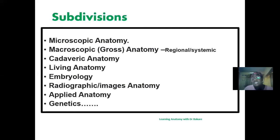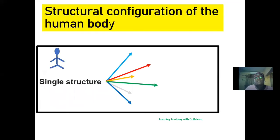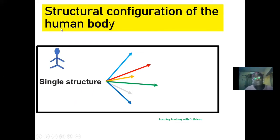The structural configuration of the body shows that it has different structures that make up the entire human body. The body is seen as a single unit, but it has different structures forming that single unit. To build this single unit, we must have a framework, which is the skeletal system — the bone arrangement or network of the body that creates the framework onto which other structures are attached.